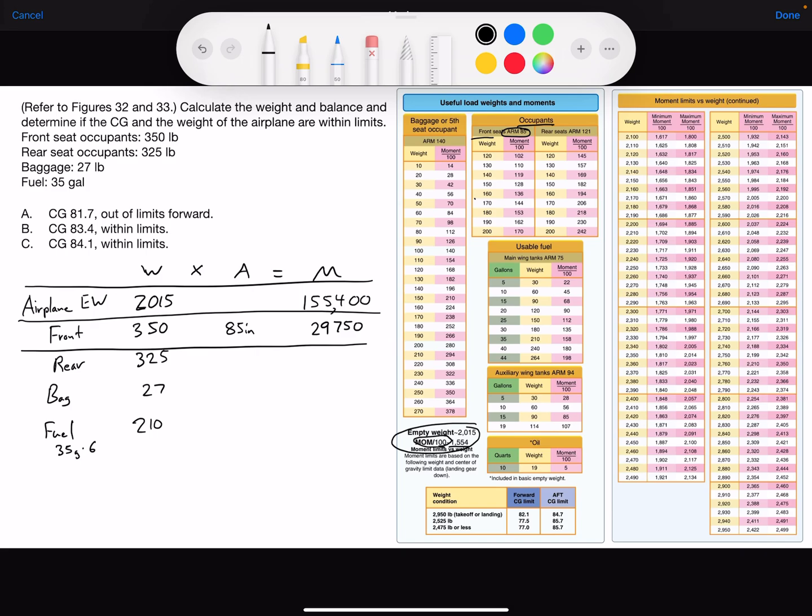Rear seat, 325. I go to occupants, rear seat. We do not see the weight there, but we'll use the arm of 121, 121 inches. Multiply those together, and you should get 39,325.